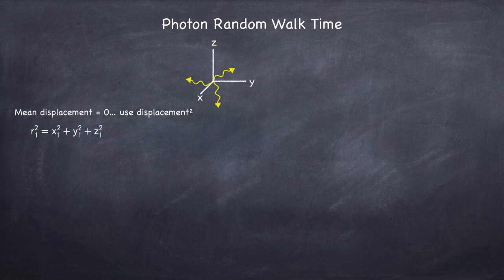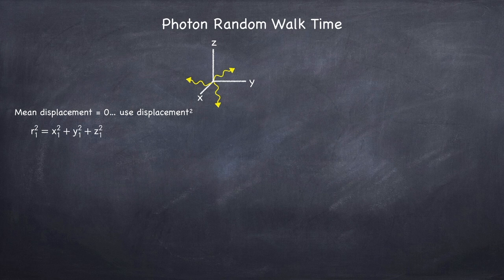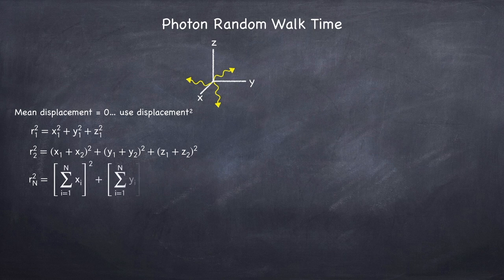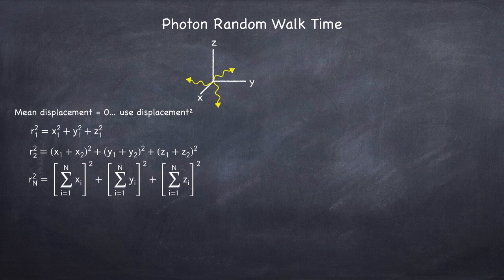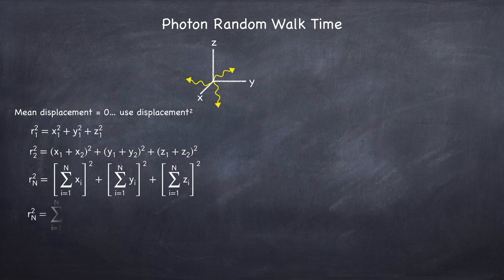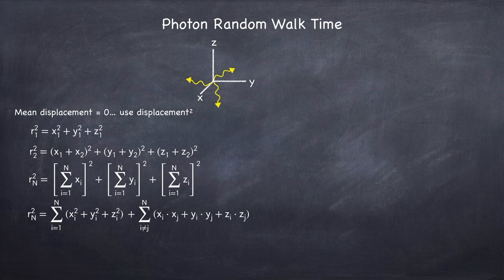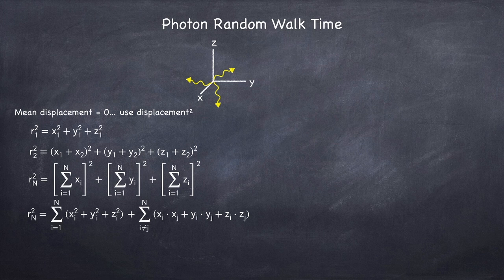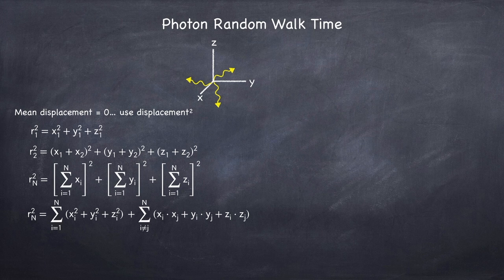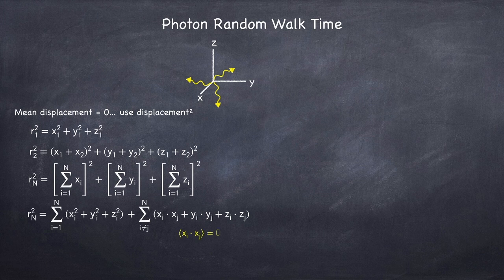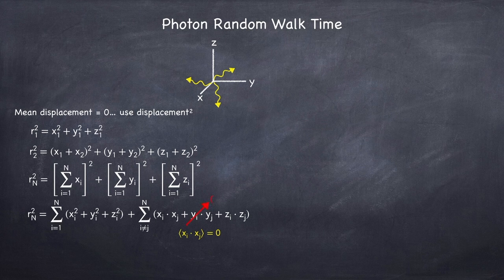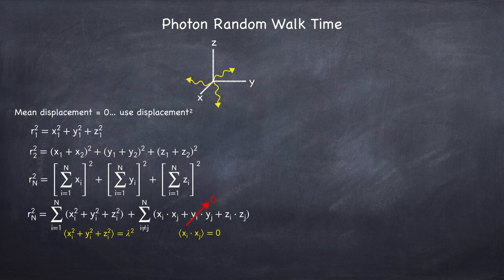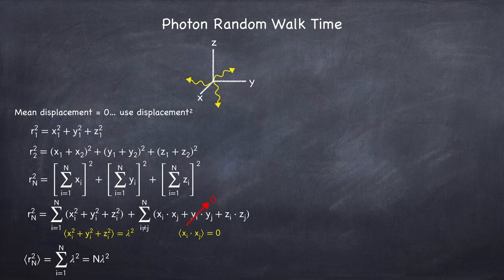After one step, the displacement squared will simply be the sum of each component squared. After two steps, we again just sum the components and square them. We can repeat this process n times to find the mean displacement squared after n steps. I'm going to rearrange these sums by first grouping all of the squared terms together, and then grouping the cross terms together. Notice that in the second sum, I'm taking i to be not equal to j. Since each step is independently distributed, and has a mean displacement of 0, the cross terms are also on average 0. And so this entire second sum averages out to 0. The first sum will simply average out to lambda squared. And so we have that the average displacement squared after n steps is just n times lambda squared.